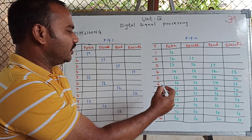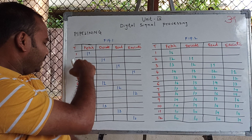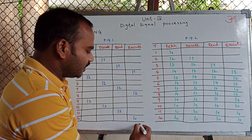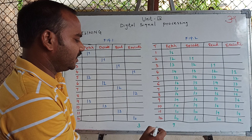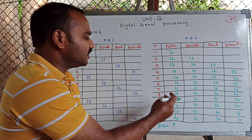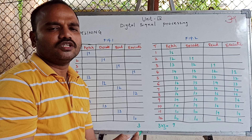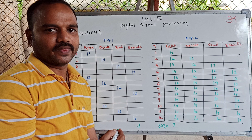Now we will compare the pipeline processor with the non-pipeline processor. In a non-pipeline processor, the total time is 12 units, and in 12 units of time only 3 instructions are executed. In the same 12 units of clock pulses, a pipeline processor executes 9 instructions — that is, 3 times 3. The throughput with pipelining is improved by 3 times, meaning the efficiency of the pipeline processor is improved by 3 times.